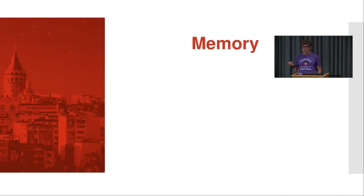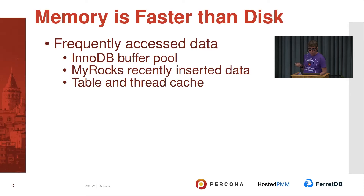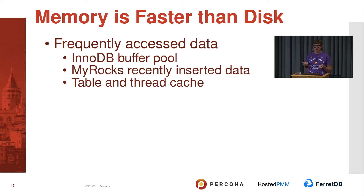Let's discuss how various hardware options affect MySQL performance. Memory: memory access is faster than disk access, and it's good to have frequently accessed data in memory. MySQL stores data in memory — for InnoDB it's the buffer pool, for MyRocks it's recently inserted data. There's also table and thread cache, and temporary objects such as tables MySQL creates when resolving your query, for example when it needs to sort results it cannot get from an index.